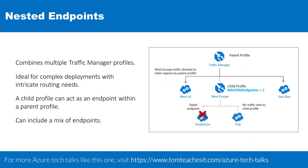And then we have nested endpoints. Nested endpoints are a feature that allows for the combination of multiple different Traffic Manager profiles. This setup is most useful for complex deployments, enabling the creation of flexible and intricate traffic routing schemes. In this structure, a child Traffic Manager profile acts as an endpoint within a parent profile. This can also include a mixture of other endpoint types, such as additional nested profiles or any combination of Azure and external endpoints.